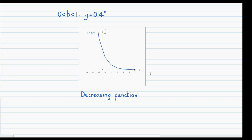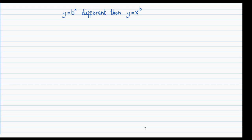The last case is for b values less than or equal to 0; however, this case is undefined and can't really be analyzed. One important technical thing to clear up is that an exponential function b to the power of x is different from a function x to the power of b. An x to the power of b graph would be something like x squared or x cubed — x squared is a quadratic function, and x cubed is a cubic function. These are completely different from exponential functions.